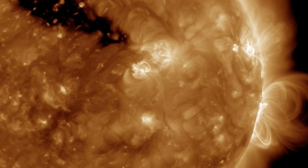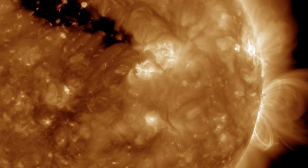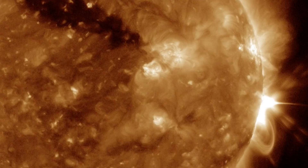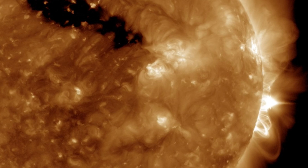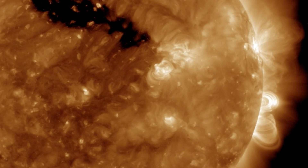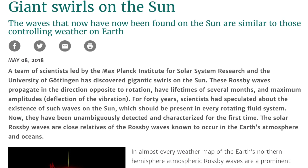An incredible article out this week details yet another way in which the Earth and Sun are alike. Giant swirls on the Sun producing Rossby waves, acting in ways that are incredibly similar to weather patterns on Earth.